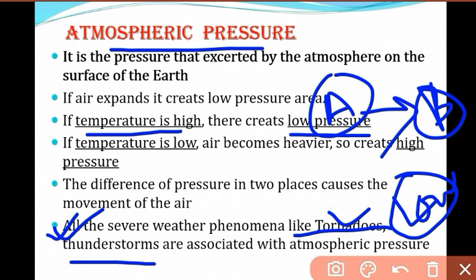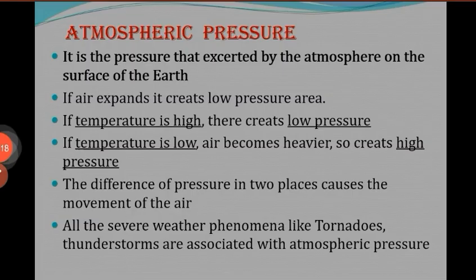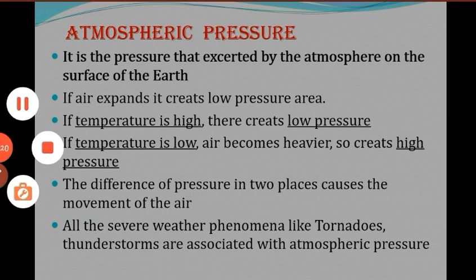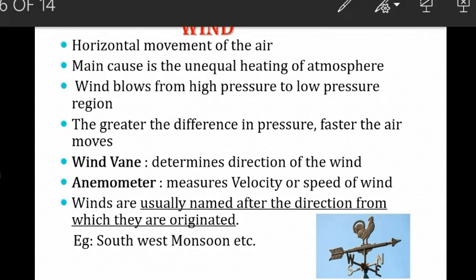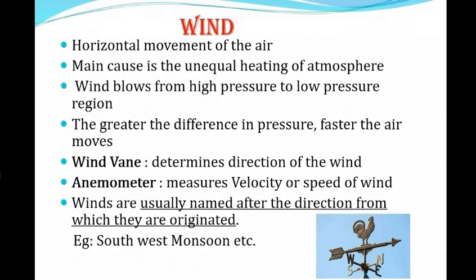The instrument used to measure atmospheric pressure is the aneroid barometer or any type of barometer. Now the third parameter: wind. Wind is the horizontal movement of air. Air is always present, but when it starts flowing, it is called wind.